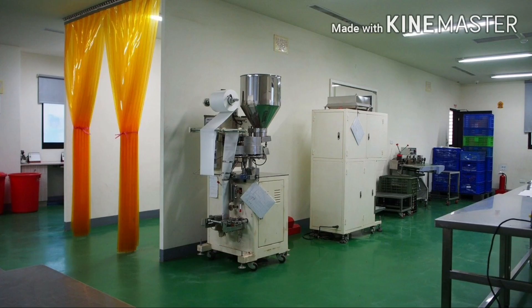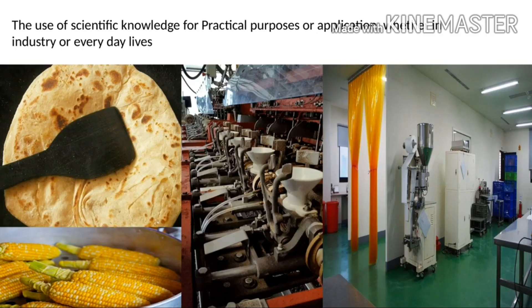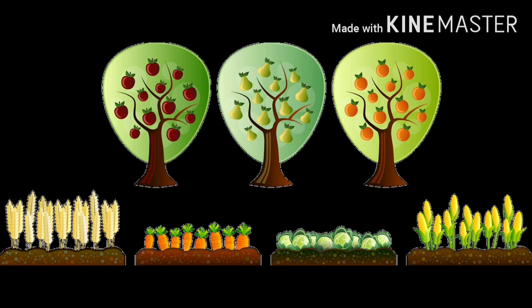What comes to mind first when you think of the word technology? It might sound like something from a sci-fi world, and the word itself looks very complex, but it actually is not. You must have heard about roti makers, peelers, choppers, or corn bead separators — or might even be using them in your daily lives. This is the simplest form of technology. We can define technology as the use of scientific knowledge for practical purposes or applications, whether in industry or everyday life.